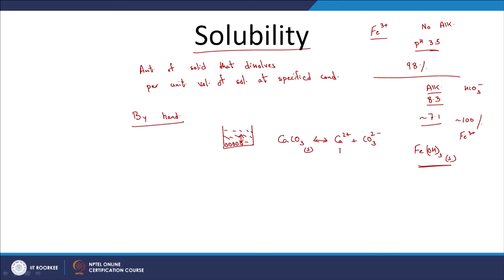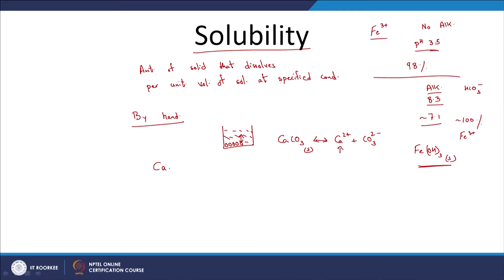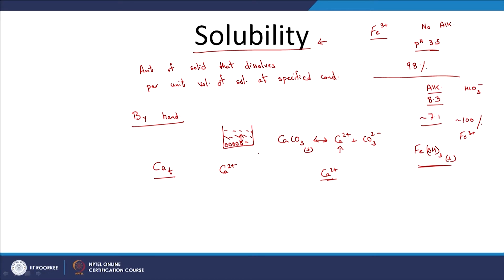When we talk about solubility we are not just talking about the free metal ion Ca2+; we are talking about the total concentration — Ca_total. This is because other complexes can form, such as calcium hydroxide complexes, which also contribute to the total calcium in the aqueous phase. So whenever we calculate solubility we calculate the total component, not just the free cation.